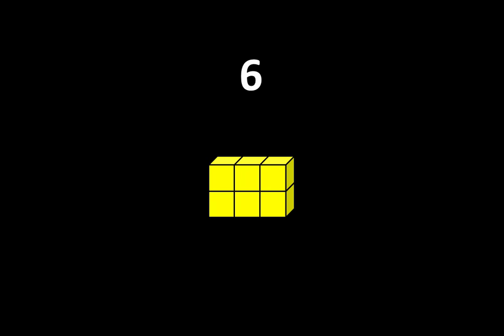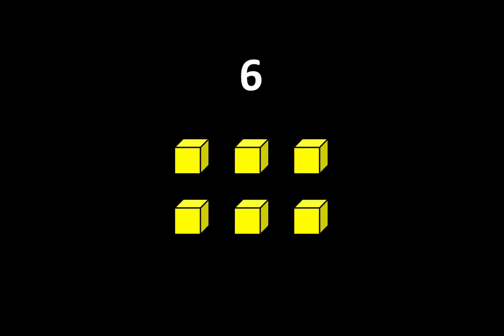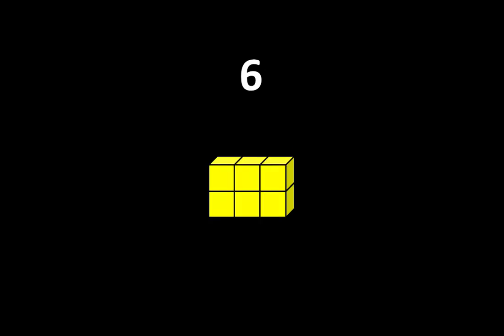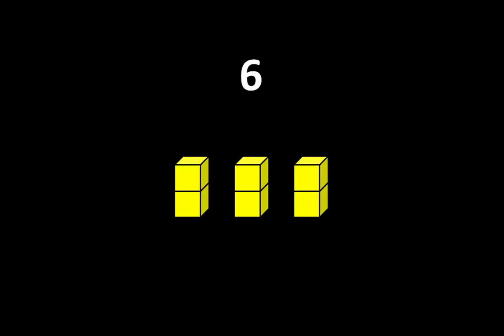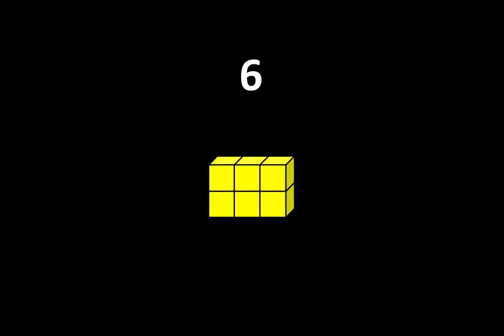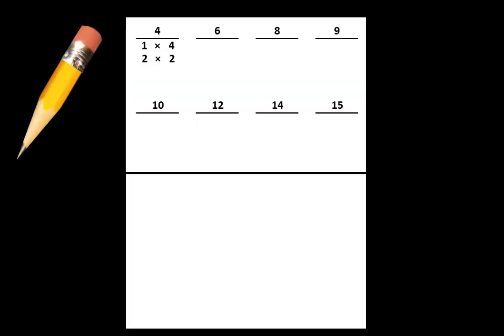What about 6? We can think of 6 as 1 group of 6 or 6 groups of 1. We can also think of it as 2 groups of 3 or 3 groups of 2. On your paper, write that we can think of 6 as 1 group of 6 or 6 groups of 1, and we can also think of it as 2 groups of 3 or 3 groups of 2.